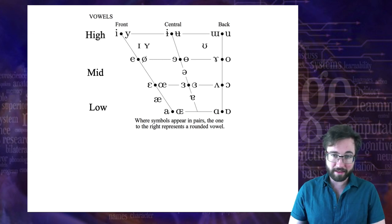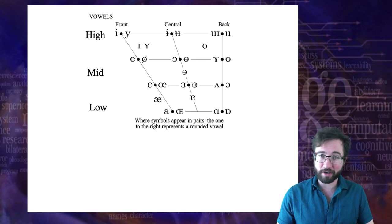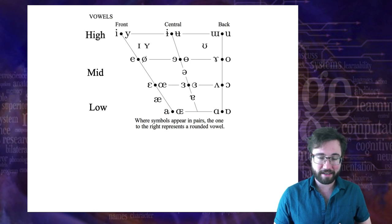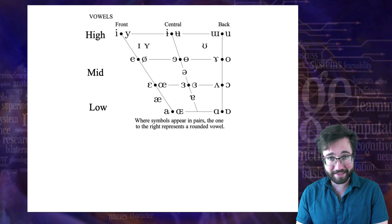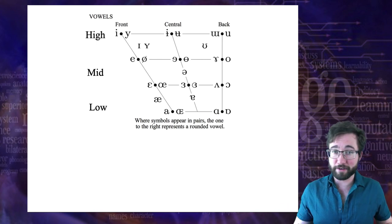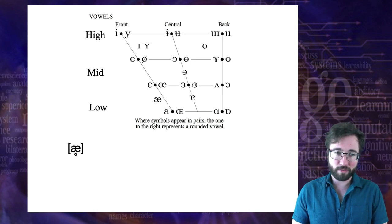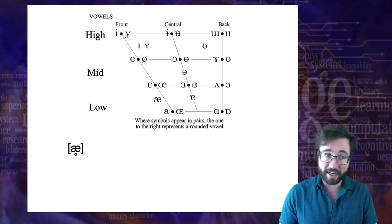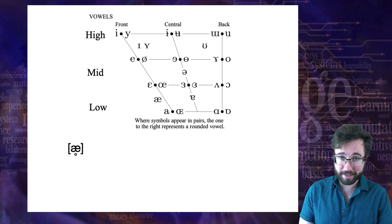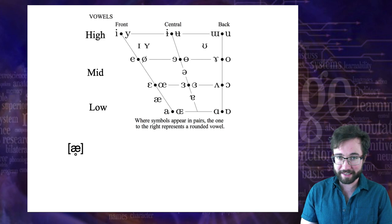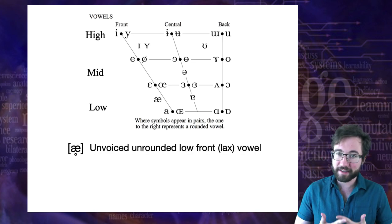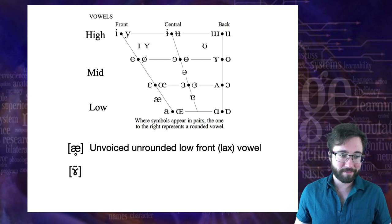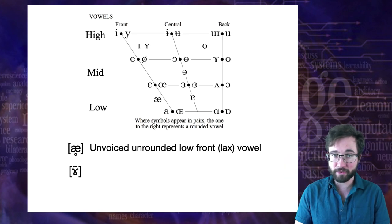We can also take these vowels and add diacritics to the symbols to indicate even more unusual kinds of vowels. Remember with consonants, we could add a tilde on top to make it nasal, a bracket under to make it dental, or a circle under to make it unvoiced. You can do the same with vowels. For example, taking the symbol 'ash' — the low front unrounded lax vowel — and drawing a circle under it means it's unvoiced. So this would be an unvoiced 'ah' sound.